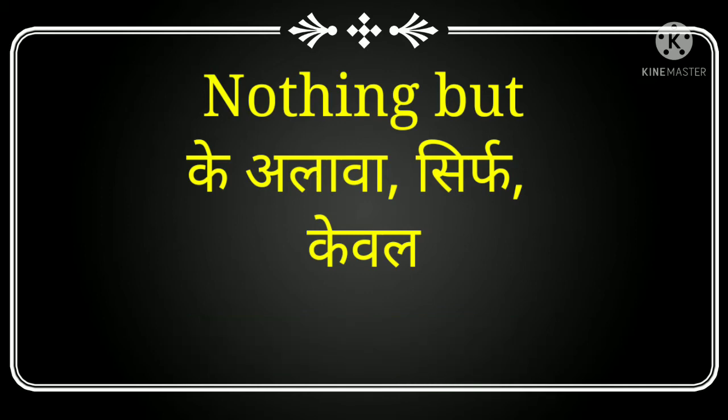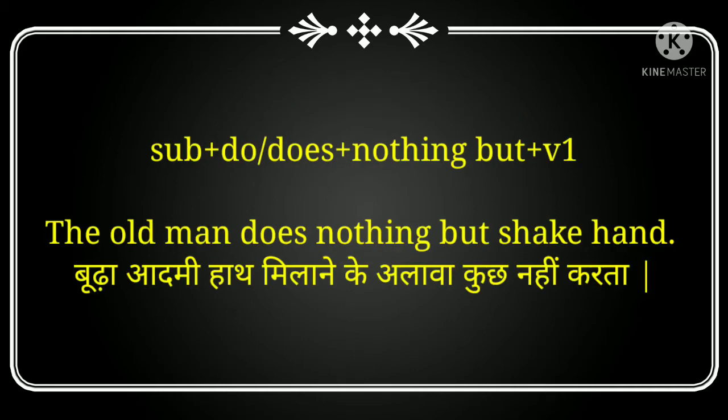कई बार हम sentences बोलते हैं जैसे: 'यह पढ़ने के अलावा कुछ नहीं करता', 'वह खेलने के अलावा कुछ नहीं करता।' तो ऐसे sentences जिनमें 'के अलावा' आता है, उनको English में translate करना सीखते हैं। Sentence structure है: Subject + do/does + nothing but + first form of the verb.